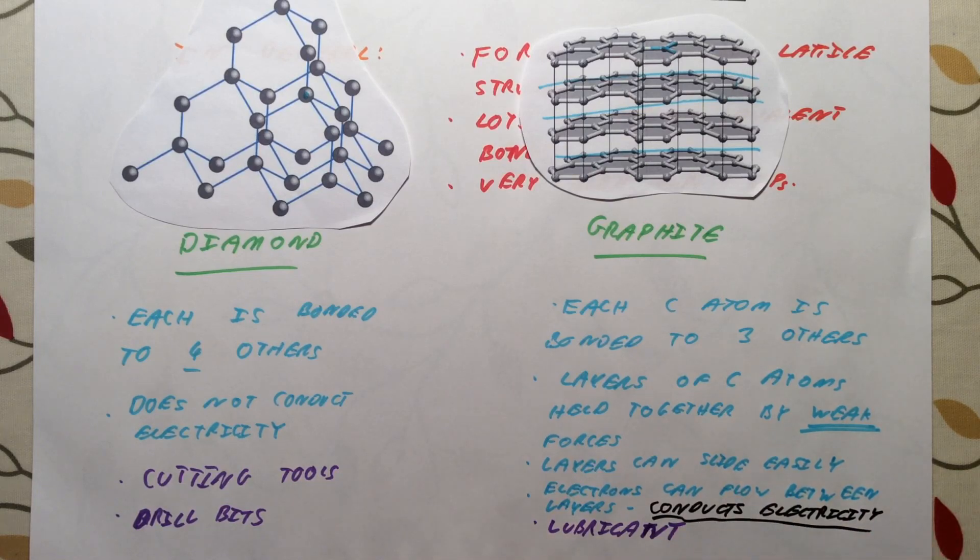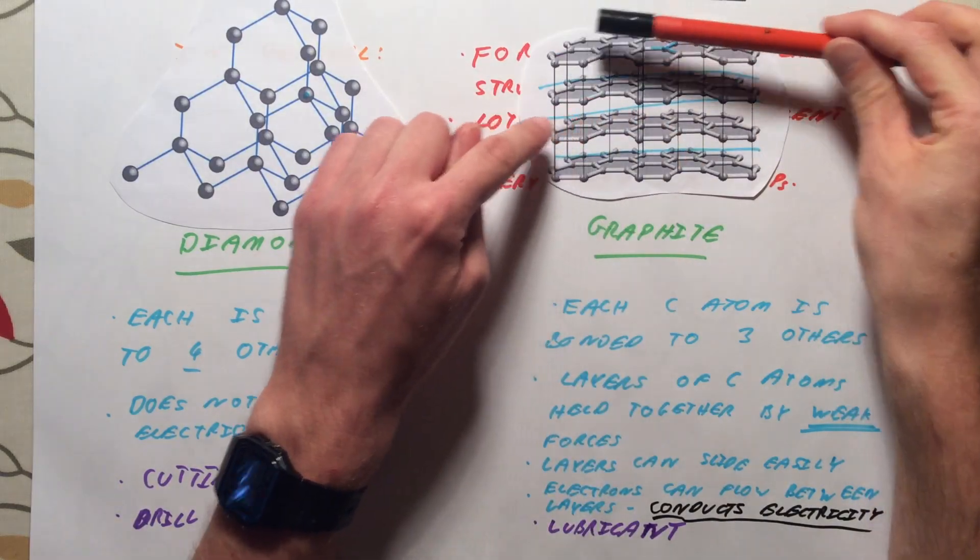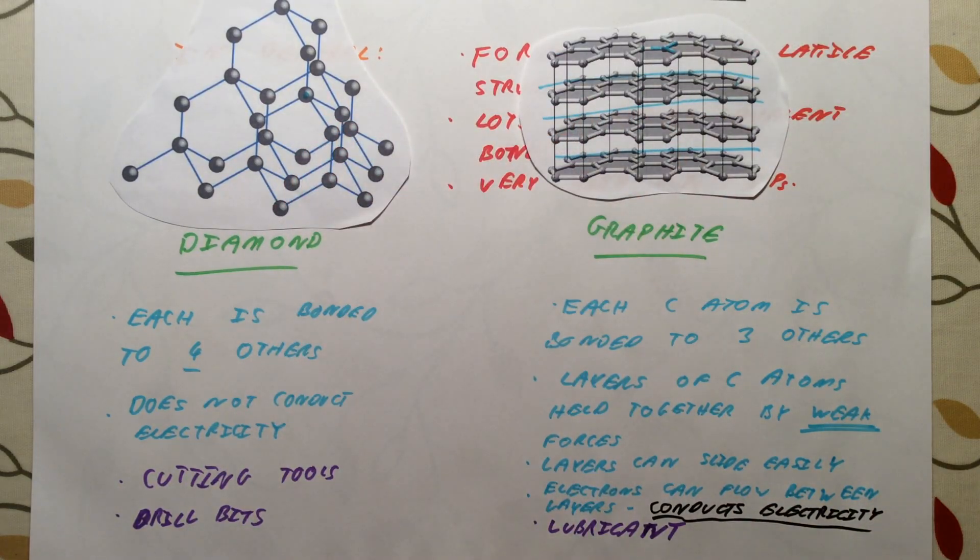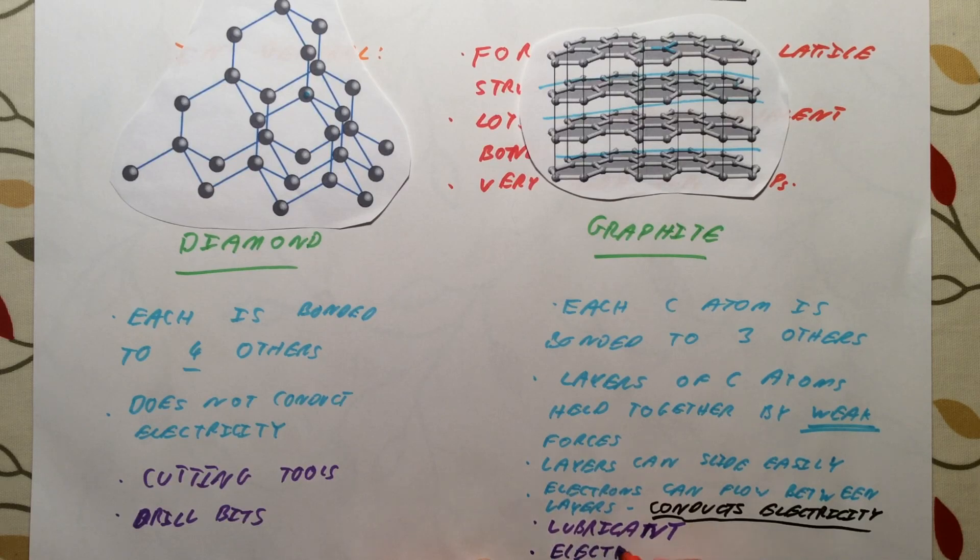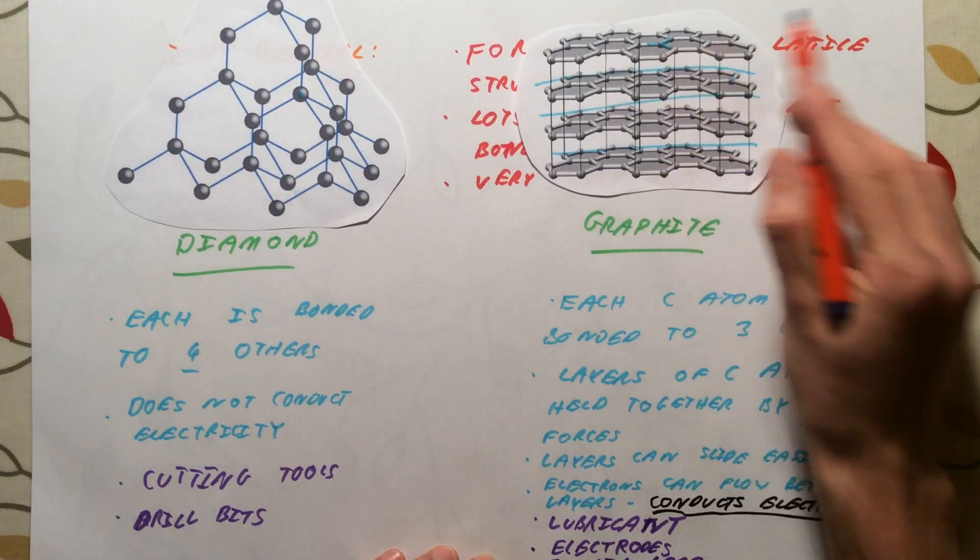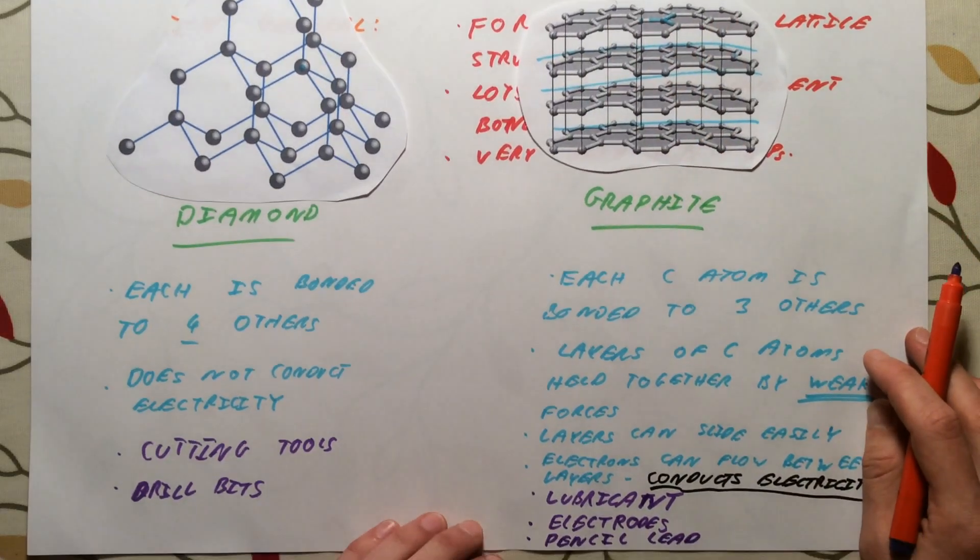So it's extremely soft because the layers are held together by weak forces which are easily overcome. It can conduct electricity. It is used as a lubricant. It is also used to make electrodes, so for an electrolysis experiment you normally use graphite electrodes. And because the layers can slide easily over each other, we actually use it to make pencil lead as well. When you write on a piece of paper, you're actually making the layers of graphite slide off.